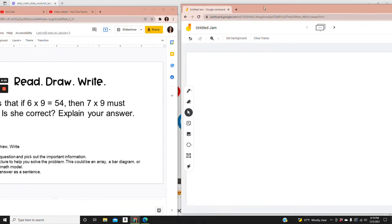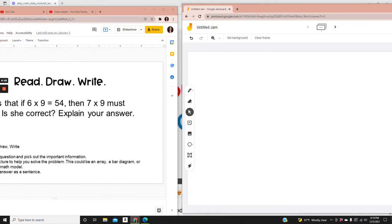She says that 6 times 9 equals 54. And we know that to find 7 times 9, we would subtract 1 from the ones place. So now there's a 3 in the ones place. And we would add 1 to the tens place. So there's a 6 in the tens place.